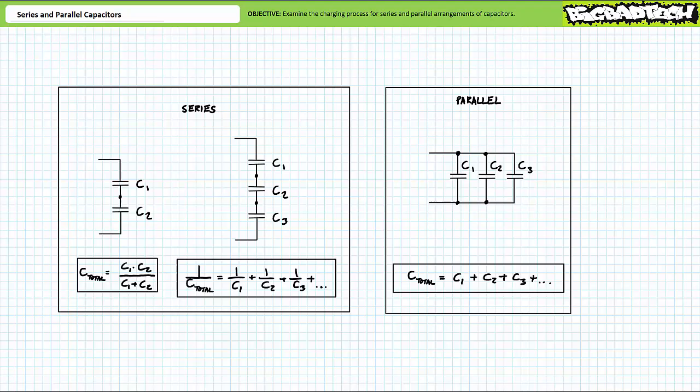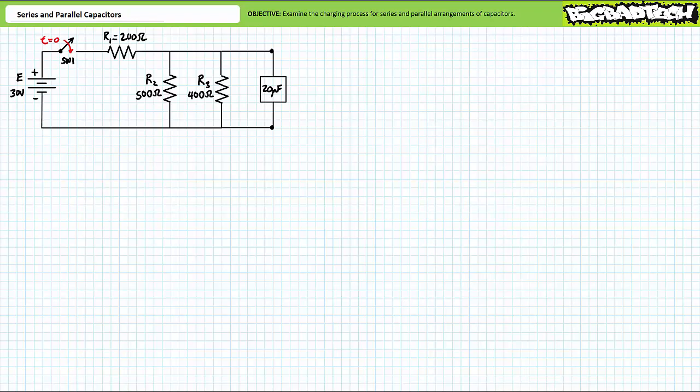As a preparatory exercise, consider a circuit consisting of a 30 volt DC source, an open switch that closes at t equals zero, R1 a 200 ohm resistor, R2 a 500 ohm resistor, R3 a 400 ohm resistor, and a box with 20 microfarads written on the outside. We're unaware if this is a single 20 microfarad capacitor, two 10 microfarad capacitors in parallel, a 12 and an 8 microfarad capacitor in parallel, two 40 microfarad capacitors in series, a 30 and 60 microfarad capacitor in series, or some other combination yielding 20 microfarads total.